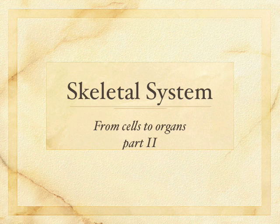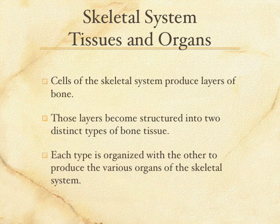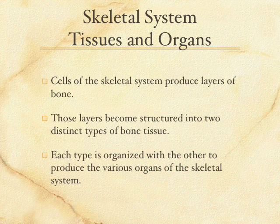This is going to take us from the cellular level up into the tissue level. We've already mentioned that the cells are producing bone in layers. Osteoblasts are laying down layers of bone, being trapped within those layers, becoming osteocytes.